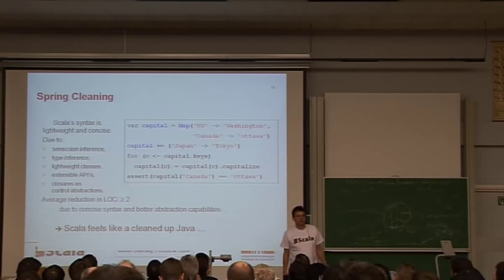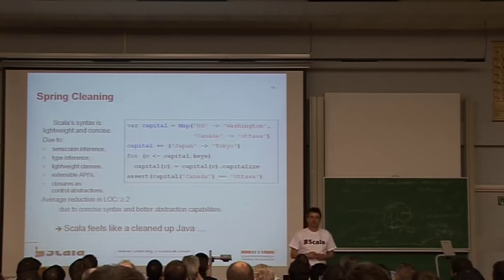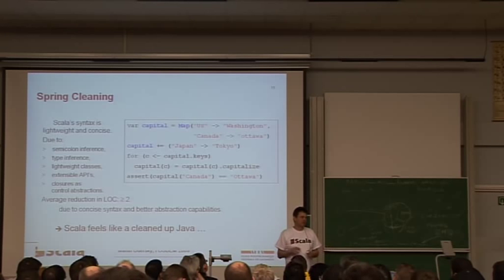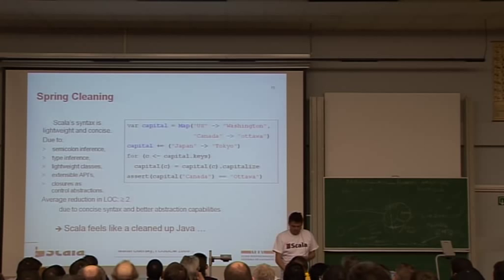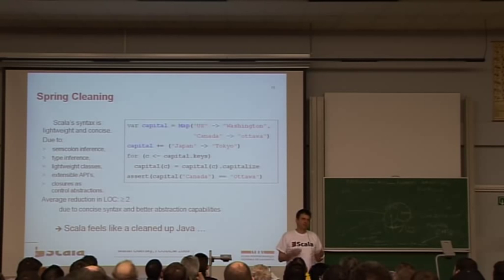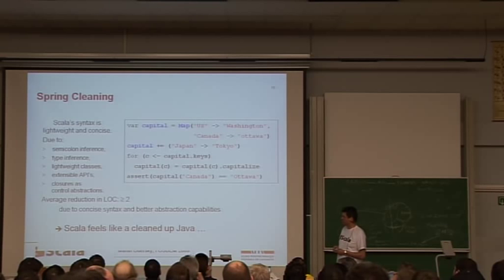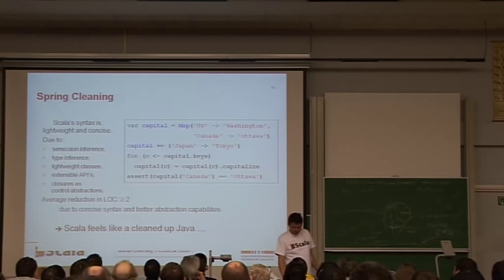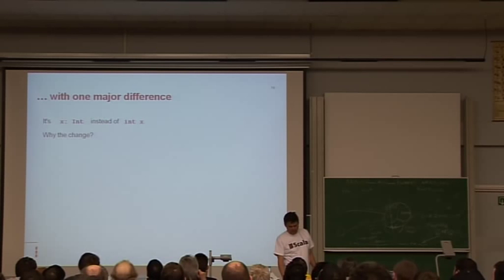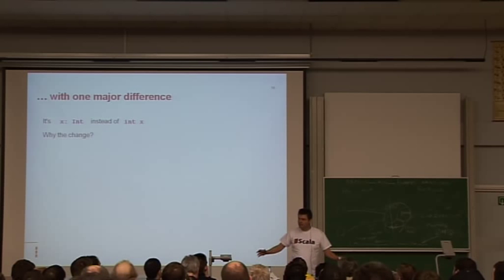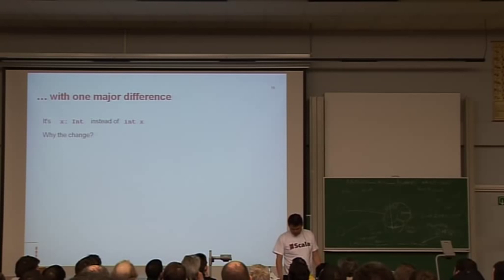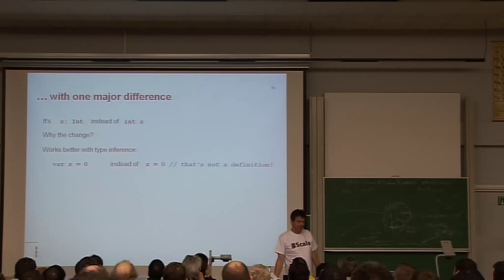So overall, it feels like a cleaned-up Java a little bit. The syntax is usually much more lightweight and concise. In my experience, if you don't change the program a lot, you will still get a reduction in lines of code of about two. And that's due to the fact that we infer a lot of things. We infer, most trivially, semicolons at the end of lines are optional in Scala. We infer a lot of types. Our class syntax is more lightweight. And then you can make use of extensible APIs, closures as control abstractions, and so on. So it feels like a cleaned-up Java, but with one major difference. And that's that we write x colon int instead of int x. And that's actually what I've been most criticized on overall. Why do you insist on writing x colon int instead of int x? It would be so much easier if you didn't do this.